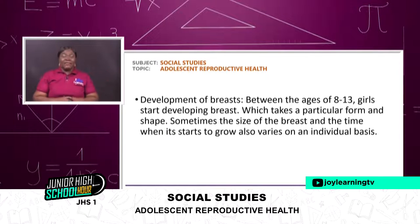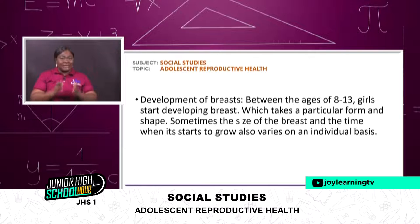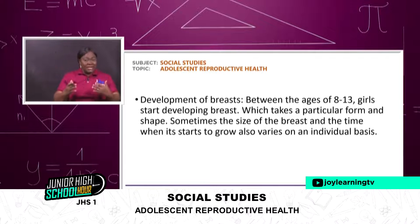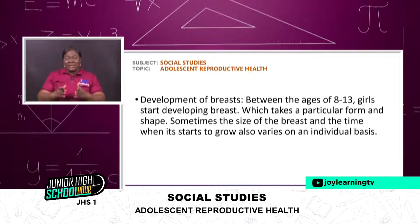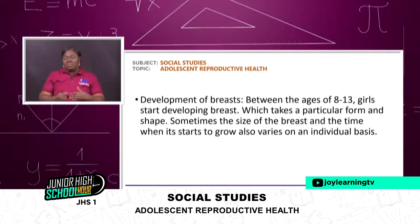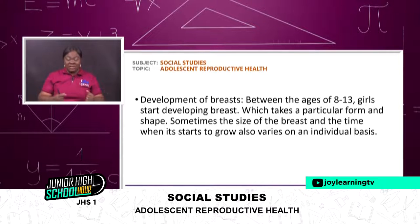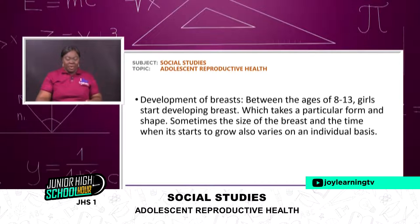Between the ages of 8 and 13, girls start developing breasts. It's not all girls that start from 8 years, but of late majority of girls start from 8 years. The world-acceptable transition is 10 years, but most girls are able to start showing these physical changes from 8 years.